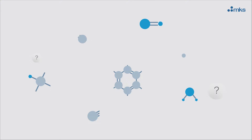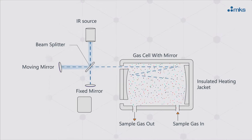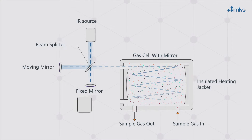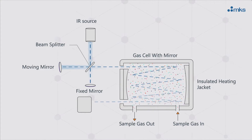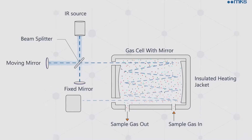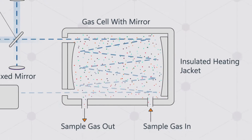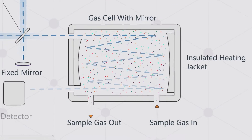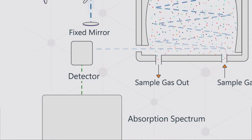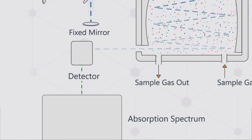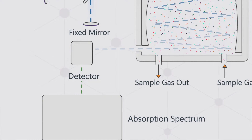So how does it work? FTIR gas analyzers operate by passing the gas sample through a multi-wavelength infrared beam, which is then partially absorbed by the gas molecules in the sample. The light signal varies in time and is converted into an absorption spectrum via a Fourier transform.